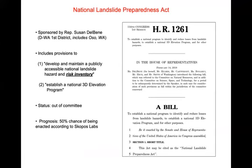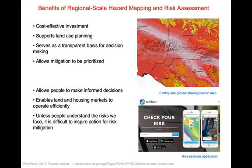This work has a lot of relevance to policy. There are currently two bills pending in Congress. The one in the House, led by Susan DelBene, includes provisions to develop and maintain a publicly accessible national landslide hazard and risk inventory, and also includes a provision for establishing the 3DEP or 3D Elevation Program. This bill is currently out of committee — significant because only about one in four bills make it out — and according to Scopetus Labs, a legislation analytics firm, has a 50% chance of being enacted. That bill captures the benefits of regional scale hazard mapping and risk assessments. Reports have demonstrated that mapping is a very cost-effective investment, supporting land use planning, serving as a transparent basis for important decisions, and allowing mitigation actions to be prioritized.